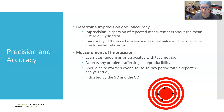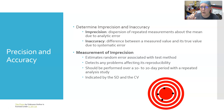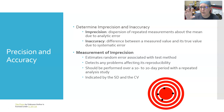Whenever you have a method — especially a new one — you need to determine its imprecision or inaccuracy. Imprecision is the dispersion of repeated measurements about the mean due to analytic error. Values are dispersed around the mean — sometimes hitting it, sometimes above, sometimes below — and how widely they're dispersed reflects precision.